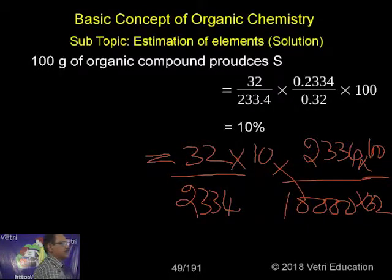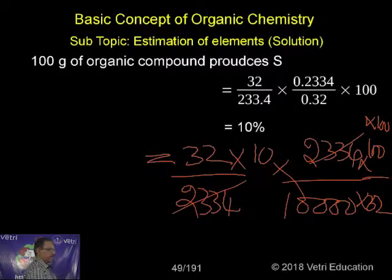Then again, now there is one more hundred here, kindly follow. If you cross everything, you will get the 2334, 2334 cancel. This is 20, 20, that is 40 cancel. Then here again 32, 32 cancel. Only 10 is there.